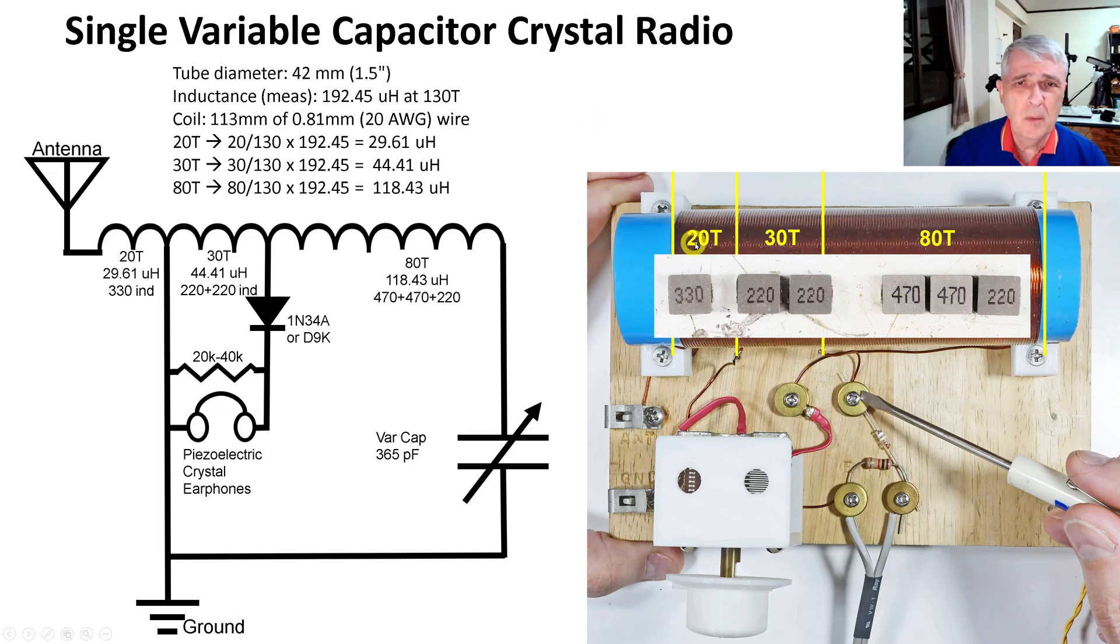How did I get that? Well, my equipment will not measure these subcomponents of the coil because there's just too much interference from the rest of the coil. So what I had to do is measure the entire coil, and that comes out to 192.45 microhenries, and then assume that each one of these was the ratio of this to the total piece. So on the first one, for example, it's 20 turns to 130 turns total times the measured inductance of the whole coil, and I got roughly 30.